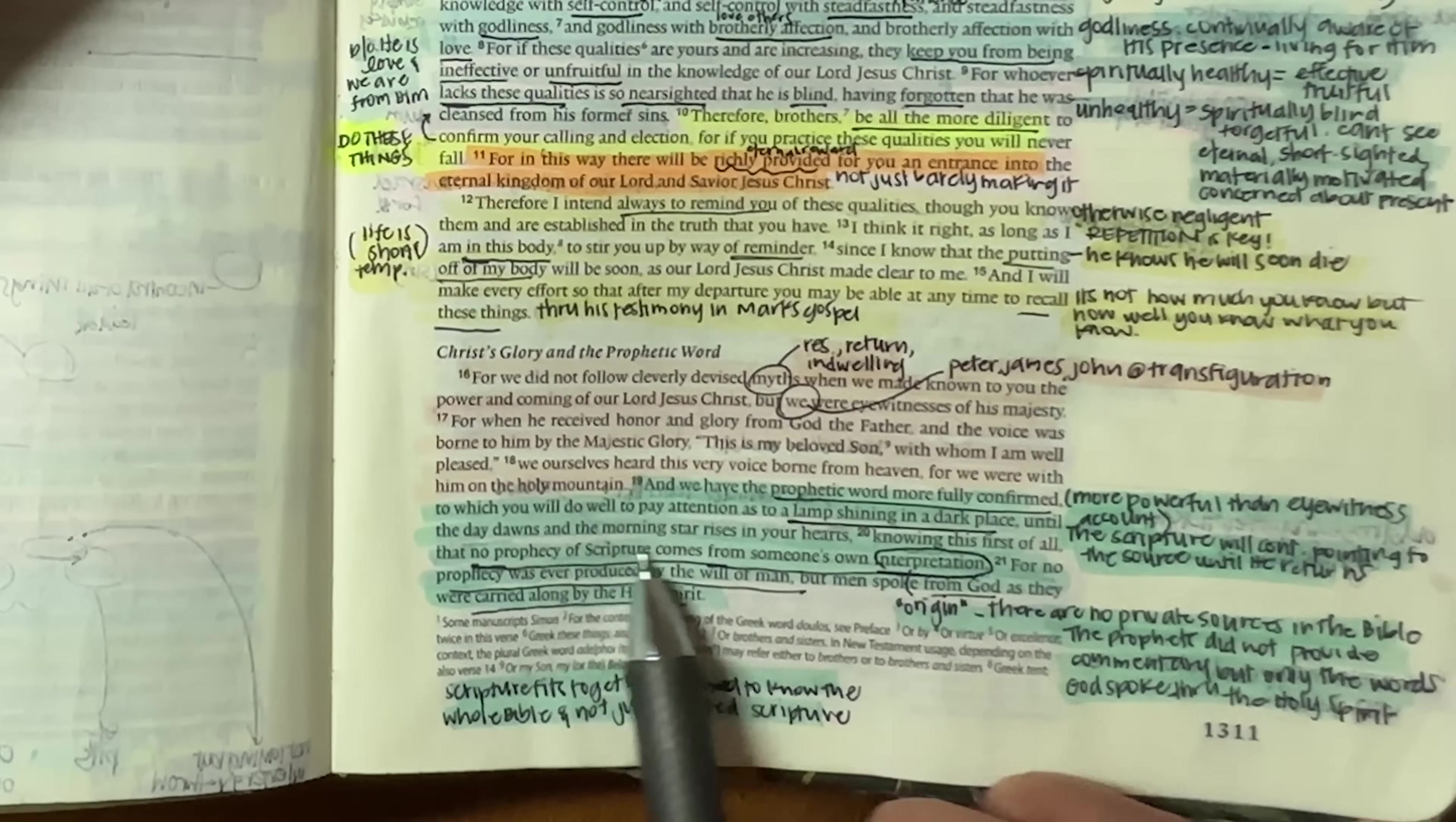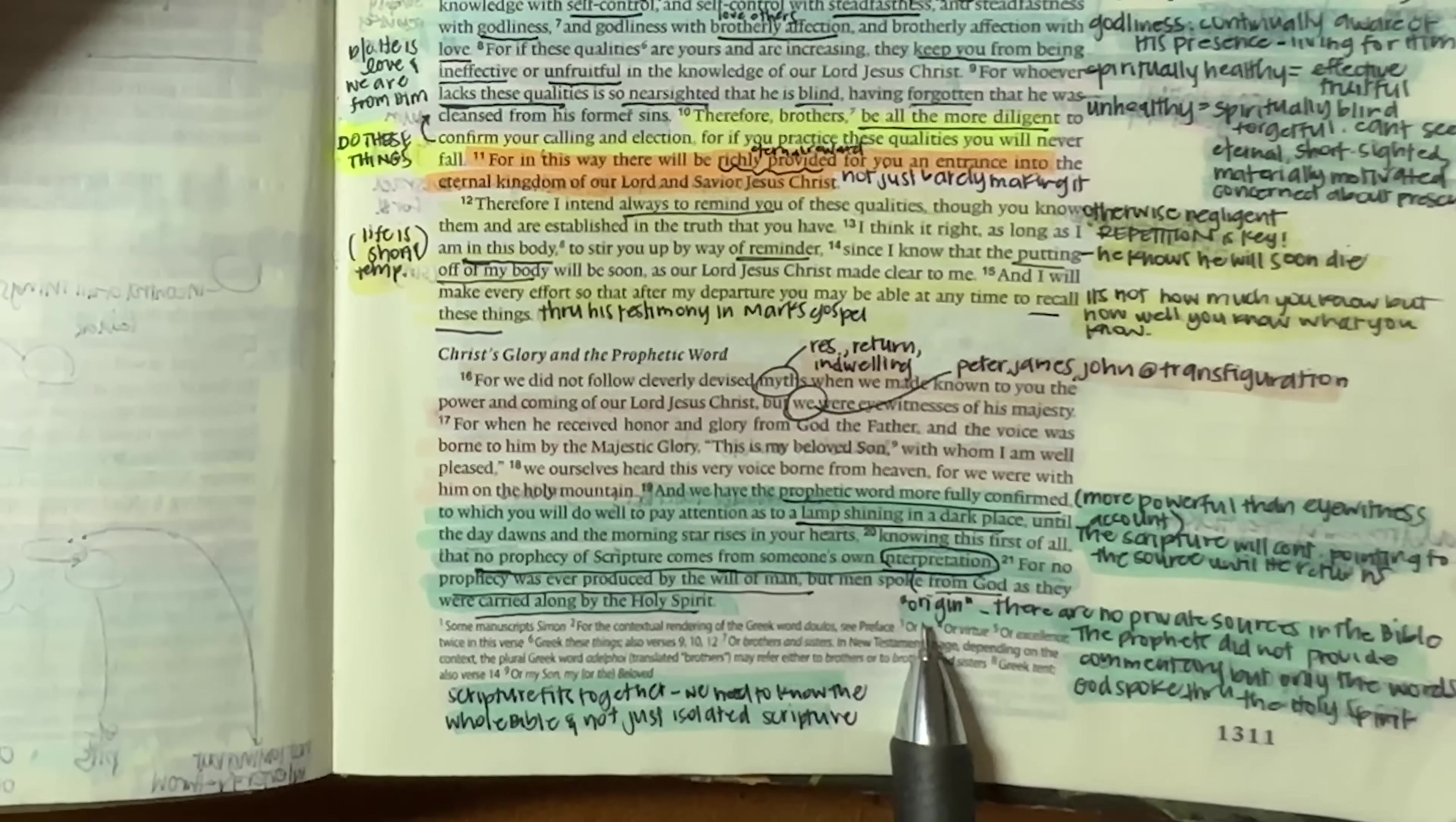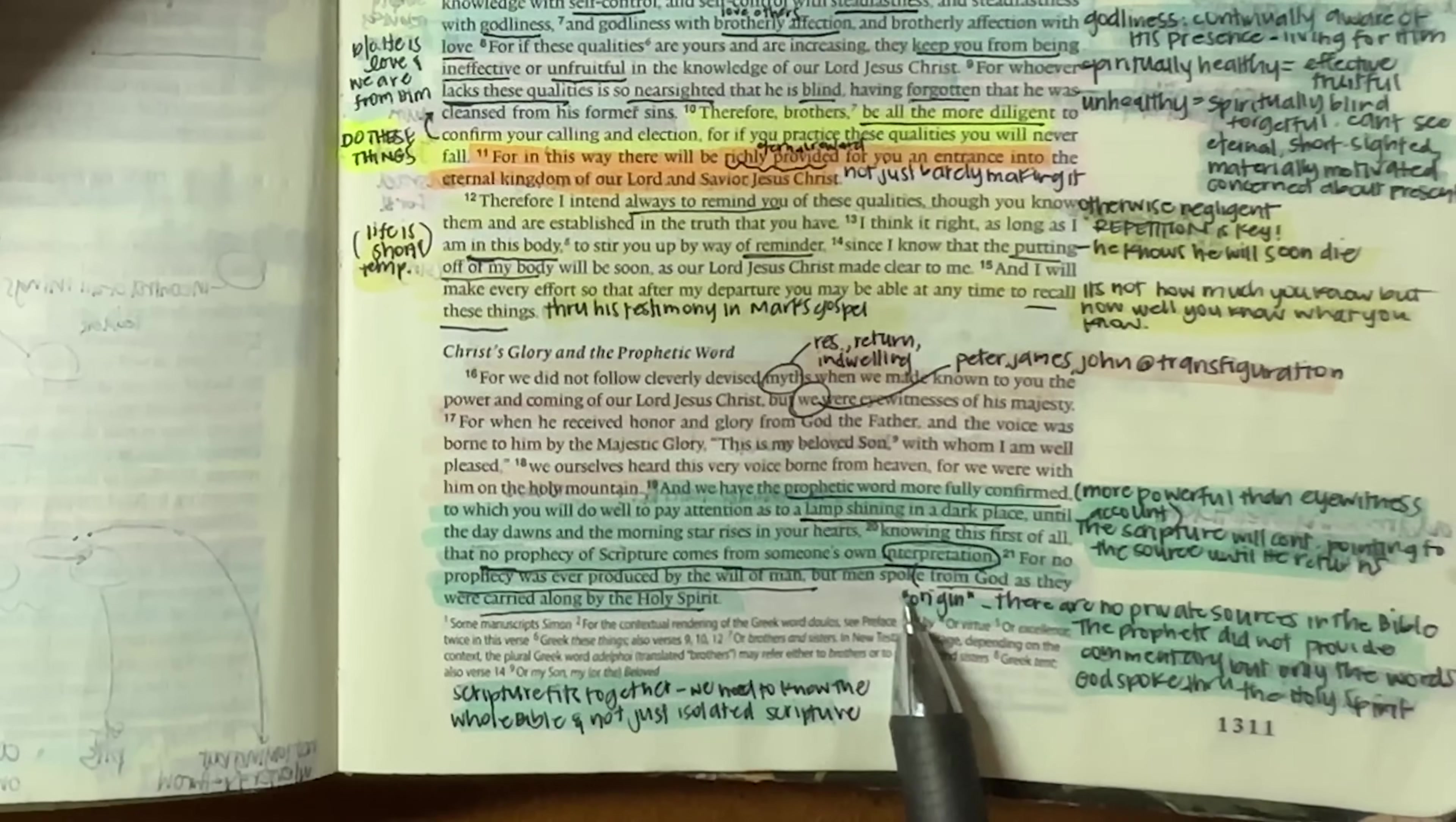And he is saying no prophecy ever came from just one person. There are no private sources in the Bible. The prophets didn't provide commentary whenever they spoke the word of God. They simply spoke whatever it was that the Holy Spirit had given them to speak and that's it. Therefore, it needs to be taken as truth. And he says, for no prophecy was ever produced by the will of man, but men spoke from God as they were carried along by the Holy Spirit.